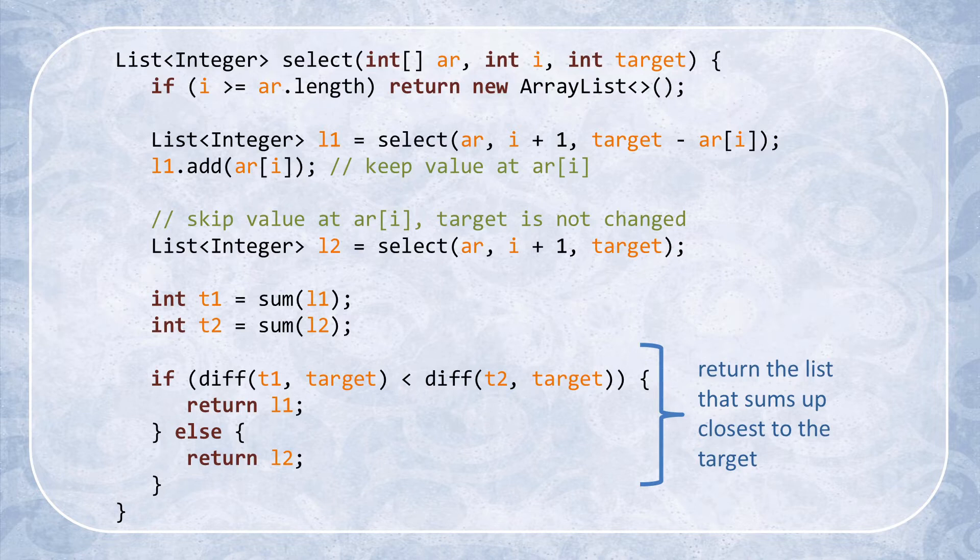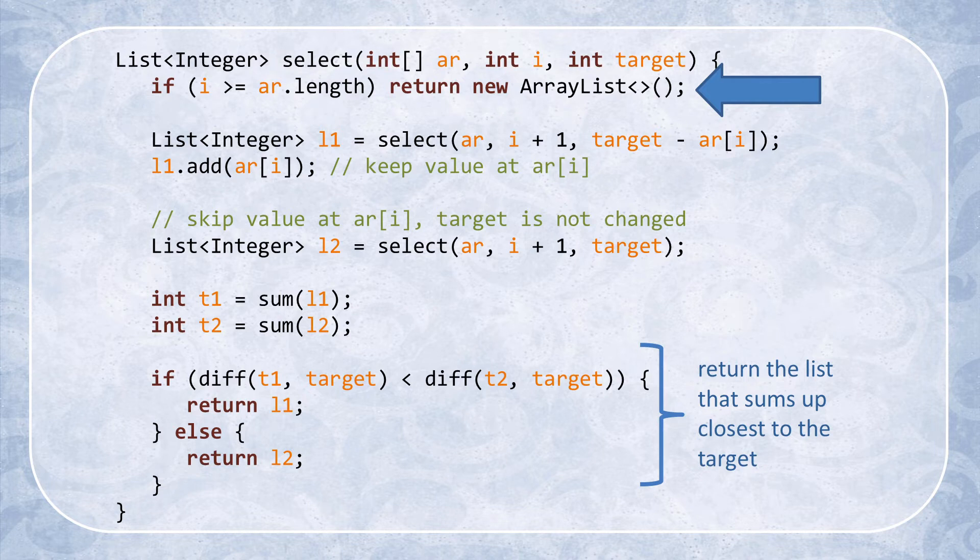This part of the function is trivial. It just sums up the values in each list and the diff function checks which of the sums is closer to the target. With the addition of the first line that returns an empty set once we reach the end of the array, our function is now complete.